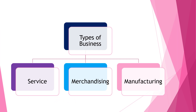As we all know, there are three types of business. We have service, merchandising, and manufacturing. When you say service, it provides services at a fee. Merchandising is a buy and sell of finished products. Manufacturing makes and sells finished products. The capital of your business means the money invested in your business.